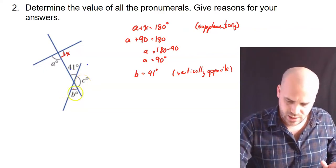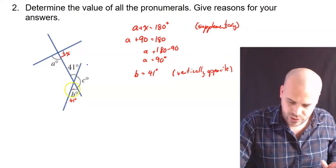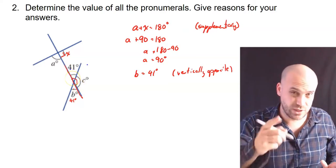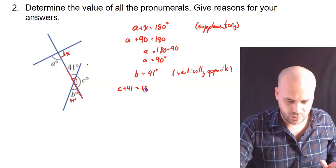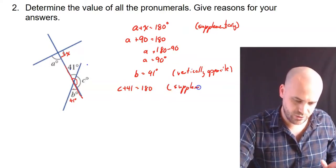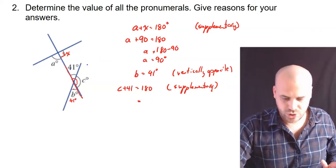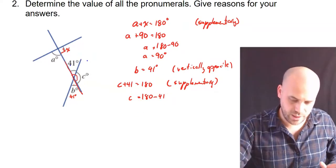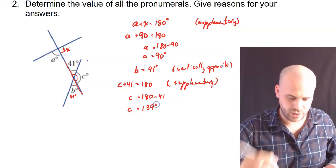Finally, we have c. Now, if b is equal to 41 degrees, or even if we just ignore b and we just focus on this bit here, we can see that this is a set of supplementary angles as well. So we can say that c plus 41 equals 180 degrees because they are supplementary. And then solve that 180 minus 41. Of course, that must mean that c equals 139 degrees.